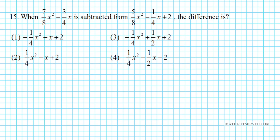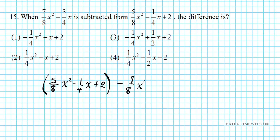Let's take a look at number 15. It says: when (7/8)x² − (3/4)x is subtracted from (5/8)x² − (1/4)x + 2, the difference is... Notice that the order of subtraction is the reverse of how it's written, so we set up: [(5/8)x² − (1/4)x + 2] − [(7/8)x² − (3/4)x].